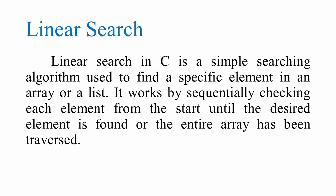Linear search in C programming is a simple searching algorithm used to find a specific element in an array or a list. It works by sequentially checking each element from the start until the desired element is found or the entire array has been traversed.